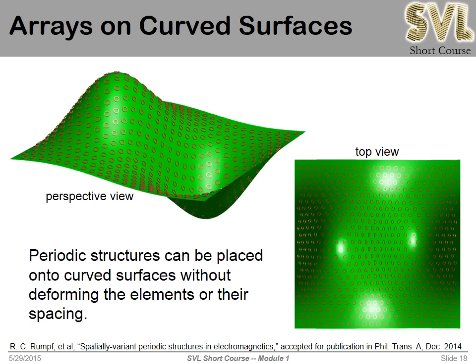One of the newest things we're doing is putting periodic structures onto curved surfaces — for example, a frequency selective surface on a radome or a metasurface. How do we keep the lattice spacing constant and elements undeformed while doing this? It turns out we can use our spatially variant tool for exactly that. So even if we don't want to spatially vary our lattice, in order to put it on a curve we have to spatially vary it, and we adapt our algorithm to do just that.